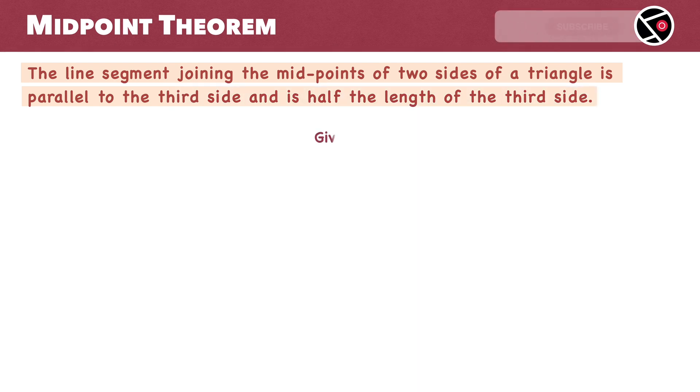So, what do we have? We have a triangle ABC with D as a midpoint of side AB. AD equals BD. E is a midpoint of AC. So, AE equals EC.